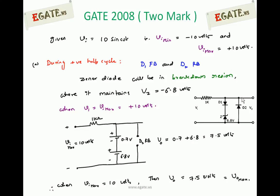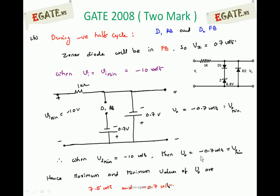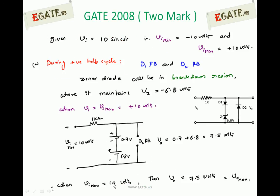D1 is under forward bias, so it maintains 0.7V across it as given, and D2 is reverse biased, acting as an open circuit. Replacing the diodes with their equivalent circuits: input voltage is 10V through a 1kΩ resistor, the Zener diode has a constant voltage of 6.8V, and diode D1 contributes 0.7V. The output voltage V0 = 6.8 + 0.7 = 7.5V. So when Vi maximum is +10V, the output maximum is 7.5V.